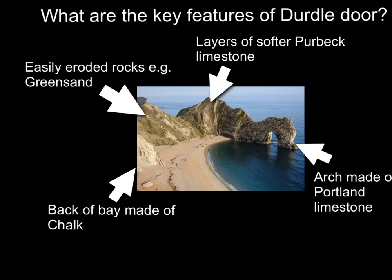Once we know where Durdle Door is located, the next important question is to understand what the key features are. Before we look at the arch itself, it's really important to understand the geology of the area. From this labelled diagram you can see that Durdle Door is made of a number of different rock types. All of these, unusually for sedimentary rocks, are actually vertical — because 50 million years ago when the Alps were forming, this whole area was compressed and folded to form these vertical layers of rock which run parallel to the coast.